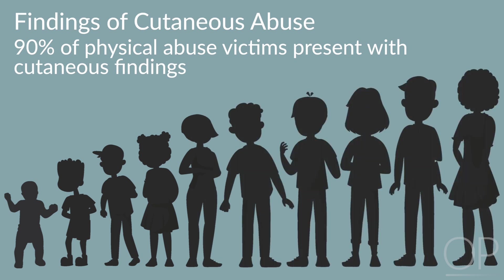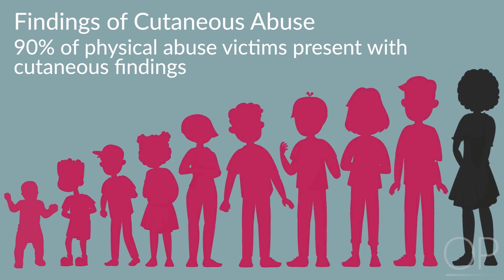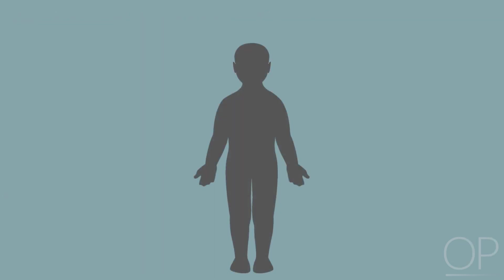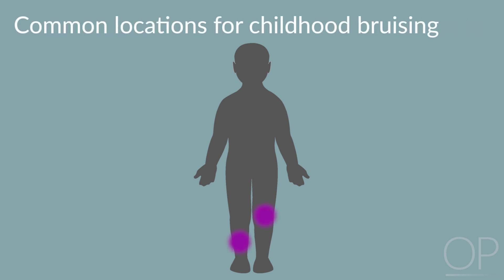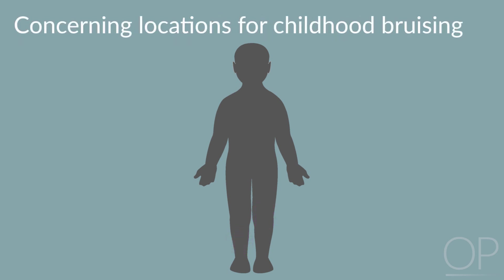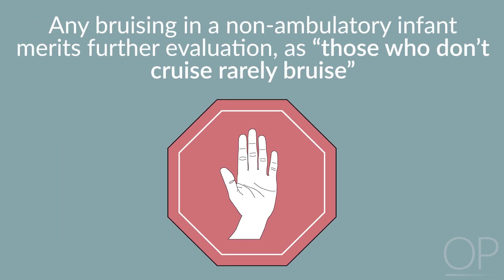90% of physical abuse victims present with cutaneous findings. In fact, a single cutaneous injury may be the only clinical indicator of child abuse. Although the location of any cutaneous injury could potentially raise concern for abuse, certain locations are more indicative of abuse. Accidental bruising typically occurs on bony prominences, including the knees and shins. In contrast, bruises located in protected areas on the torso, ears, neck, genitals, or buttocks are uncommon during the course of normal childhood activity and should prompt the provider to consider child abuse. Any bruising in a non-ambulatory infant merits further evaluation, as those who don't cruise rarely bruise.